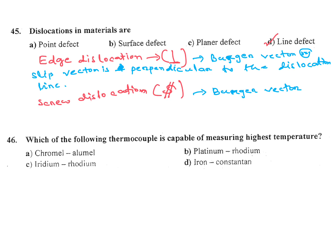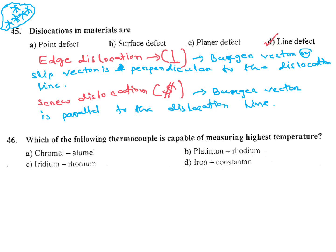In screw dislocation, the Burger vector or slip vector is parallel to the dislocation line. Sometimes exams won't mention Burger vector — they will ask whether the slip vector is perpendicular or parallel. This is very, very important for all exams: GATE, Coal India, SSC, IES.